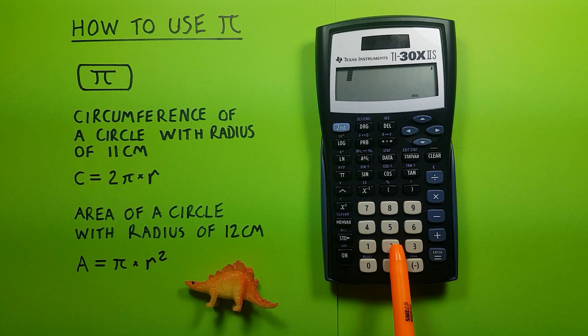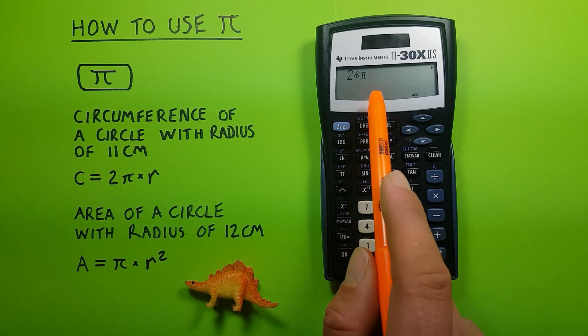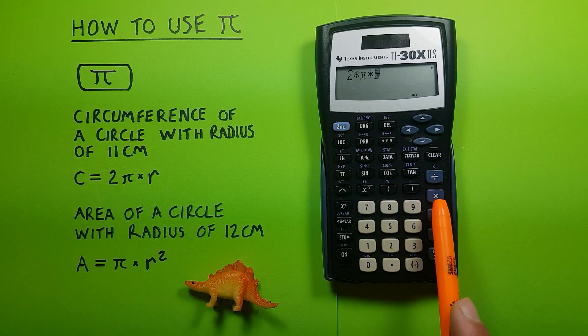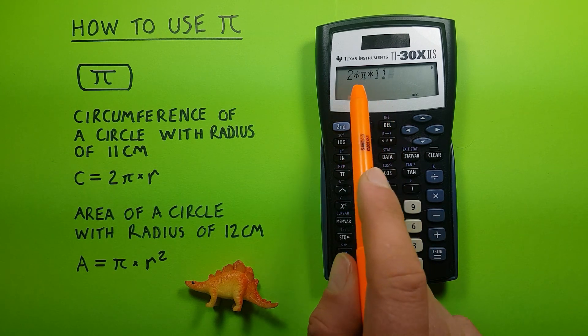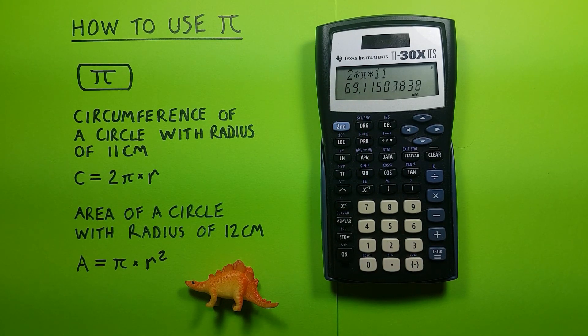We can enter that as 2 times, and then the Pi key there, times again, and then the 11. There's our formula, and if we press equals, we see we get a circumference of 69.115 etc.